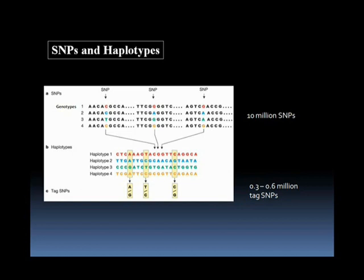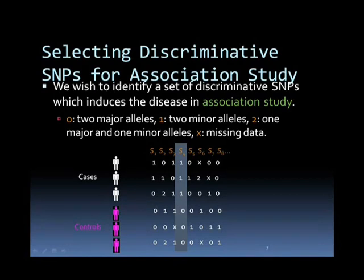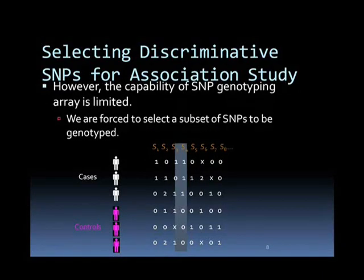This is the relationship between SNPs and haplotypes. In selecting discriminative SNPs for an association study, we wish to identify a set of discriminative SNPs which induce the disease. In the notation used: 0 indicates 2 major alleles, 1 indicates 2 minor alleles, 2 indicates 1 major and 1 minor allele, and X indicates missing data. However, the capability of SNP genotyping arrays is limited, so we are forced to select a subset of SNPs to be genotyped.